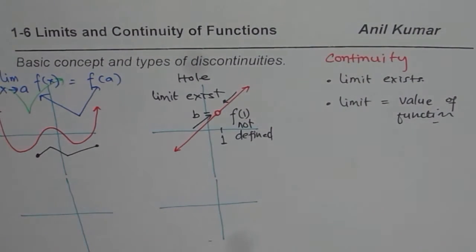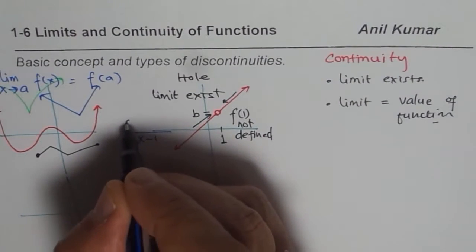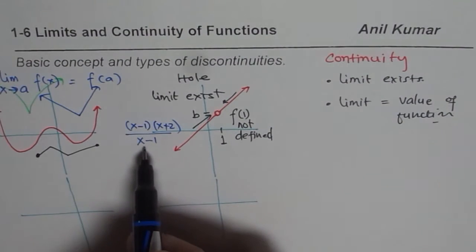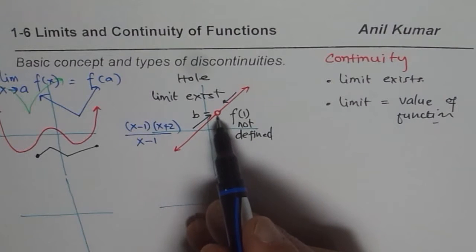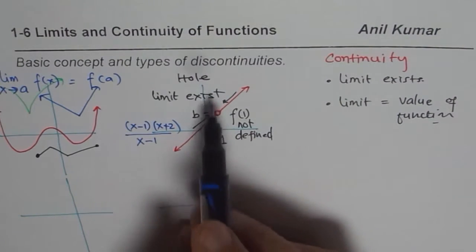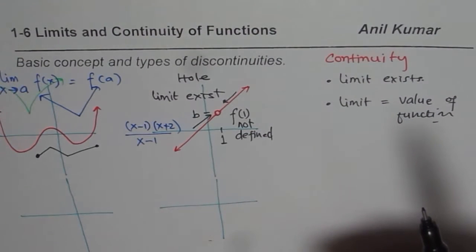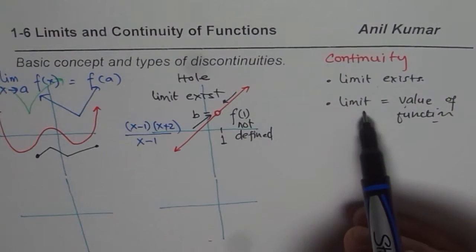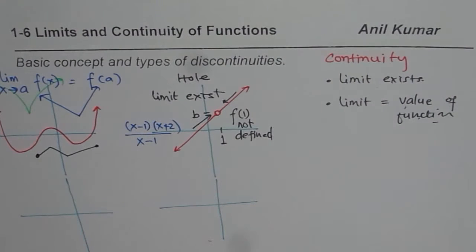As an example, a function with (x − 1) in the denominator and (x − 1) as a factor in the numerator is a function whose limit exists but has a discontinuity. Since the value of the function is not defined at that point, the limit cannot equal the value of the function — the second condition is not met. The limit exists but is not equal to the value of the function, so the function is discontinuous. This particular type of discontinuity is a hole.